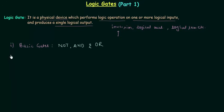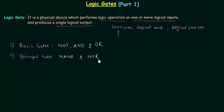The second group is universal gates. In this group we have two gates: NAND gate and NOR gate. We call them universal gates because by using only NAND or only NOR we can implement any digital system.